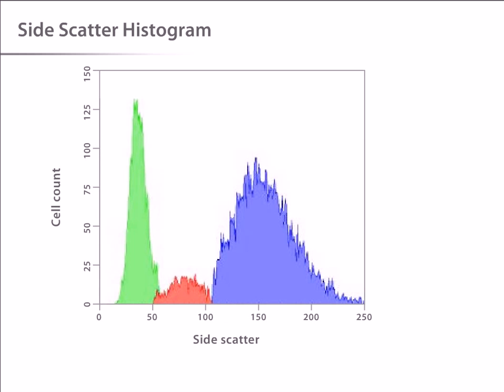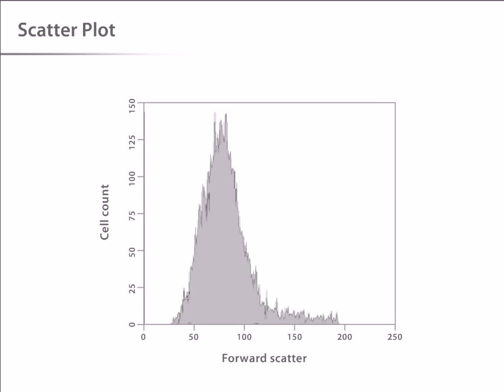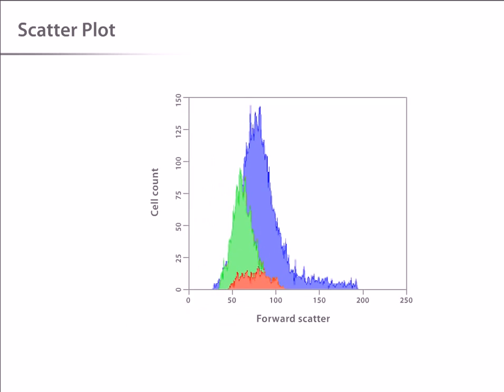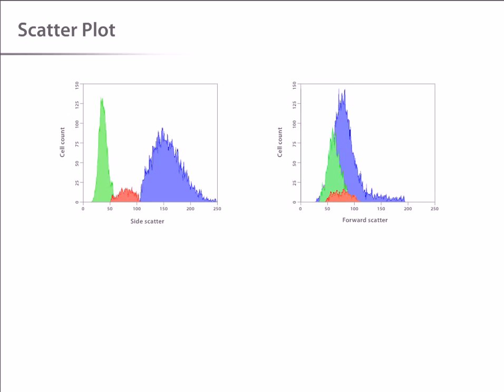The signals collected by the side scatter detector can be plotted on one dimensional histograms, like we saw for forward scatter. The one dimensional histograms we have seen so far do not necessarily show the complexity of the cell populations. For example, what appears to be a single population in the forward scatter histogram is, in reality, multiple populations that can only be discerned by looking at the data in a second dimension.